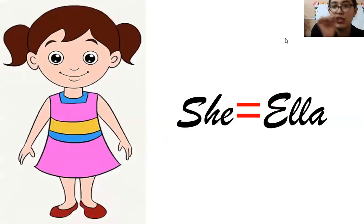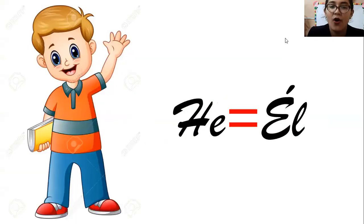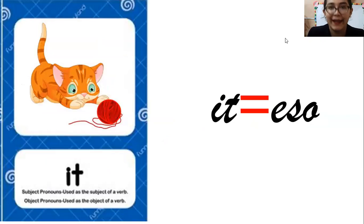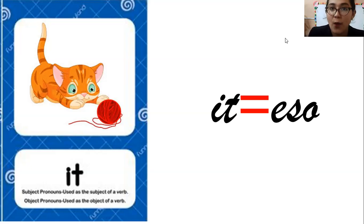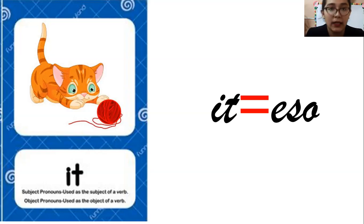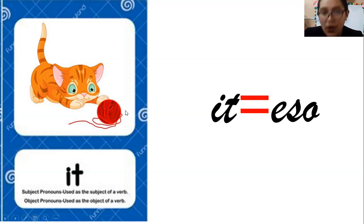Por ejemplo, she — ella — una niña, ella, singular. O he — él — one boy, one. También tenemos it. ¿Qué es it? Pues significa eso, y se refiere tanto para animals — animales — como para objects — objetos. Por ejemplo, aquí tenemos un gatito, a cat, que está con un ovillo de lana. Entonces utilizaríamos el subject pronoun it — eso — tanto para referirnos a ese gatito como para referirnos a ese ovillo de lana. Porque hay un animal y hay un objeto, singular, one — it, eso.